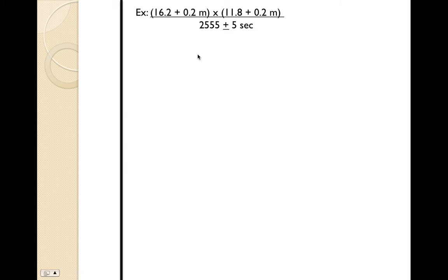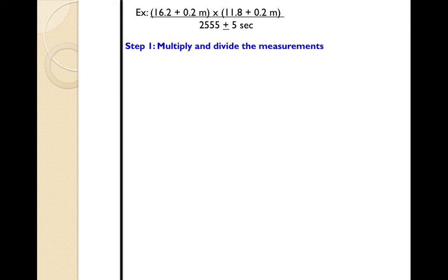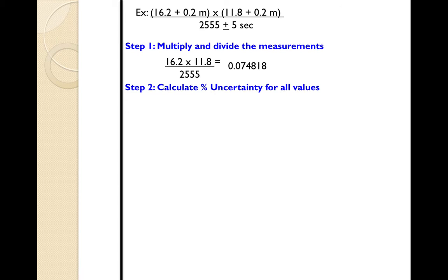Here is another example involving multiplication and division: 16.2 plus or minus 0.2 meters times 11.8 plus or minus 0.2 meters, all over 2555 plus or minus 5 seconds. The first step is to multiply and divide the measurements — not the absolute uncertainties — and you get an answer of 0.074818. I'll keep the full figure until the very end.